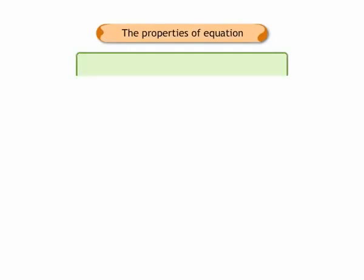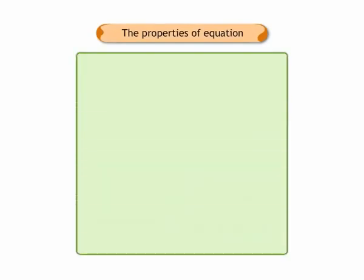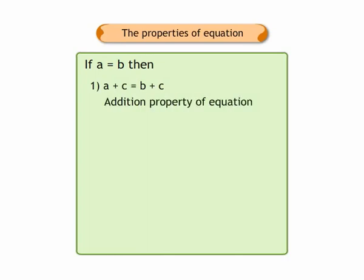Dear children, we have learnt about an equation. Let us revise the properties of equation quickly. If A is equal to B, then: 1. A plus C is equal to B plus C. This is the addition property of equation.